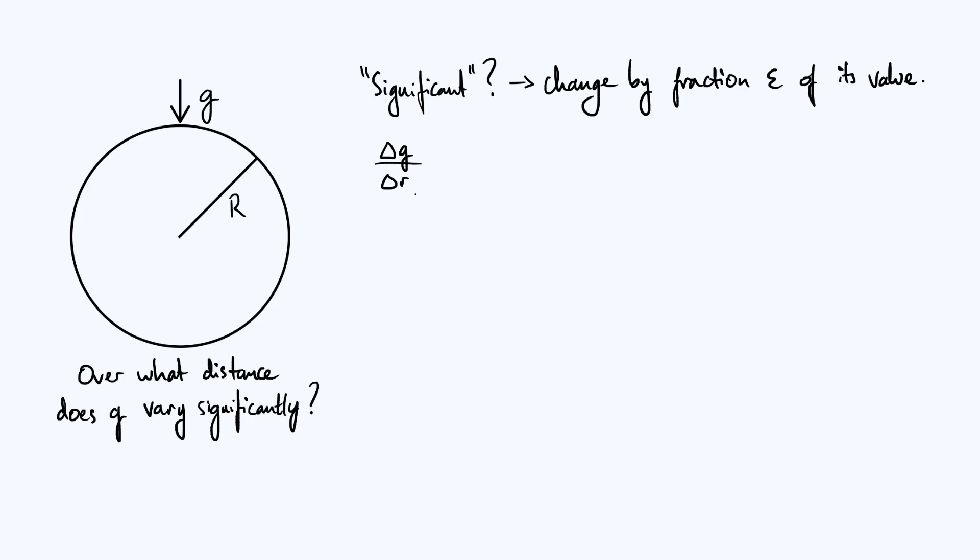But we're specifically interested in this length scale over which g changes significantly, so we may as well call that delta r L to indicate that's the thing that we're looking for, and according to the definition of significance that we've adopted above, we're interested in the case where delta g is a fraction epsilon times g itself.